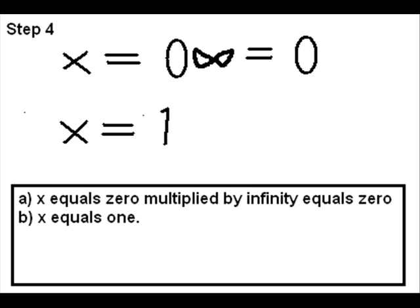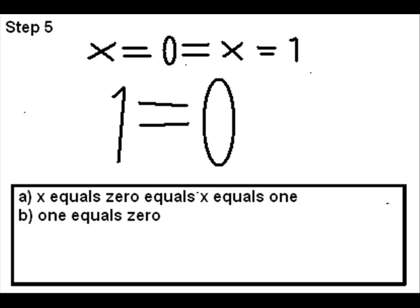But then you can bring back the infinity cancelling out the divide by infinity, whereas x equals 1 in this. So from this we get the equation: x equals 0 equals x equals 1. And that leaves us with, basically, 1 equals 0.